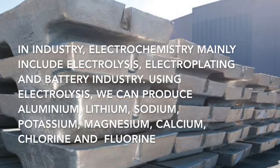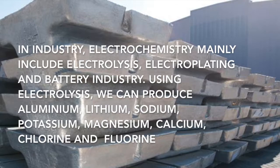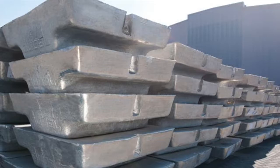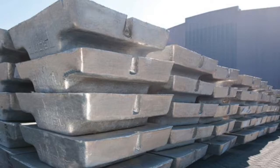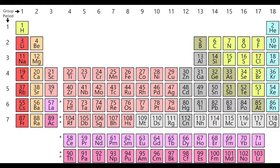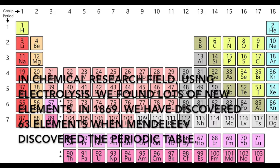In industry, electrochemistry mainly includes electrolysis, electroplating, and battery industry. Using electrolysis, we can produce aluminum, lithium, sodium, potassium, magnesium, calcium, chlorine, and fluorine.